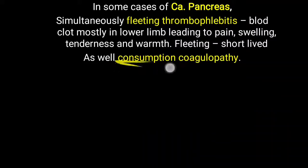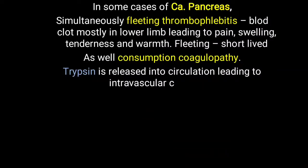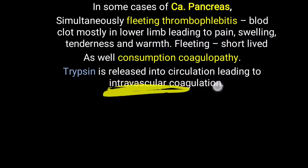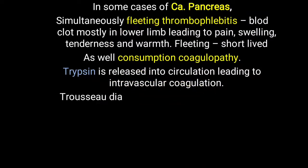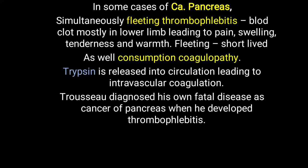The second condition is consumption coagulopathy — the clotting factors are utilized, leading to coagulopathy formation. Trypsin is released into the circulation in CA pancreas, which leads to intravascular coagulation, and that is responsible for the fleeting thrombophlebitis. Notably, Trousseau himself diagnosed his own fatal disease as cancer of the pancreas when he developed this thrombophlebitis.